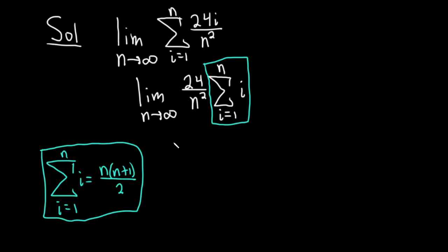So this is now going to become the limit as n approaches infinity of 24 over n squared times, and now we're going to apply the formula to what you see here in the blue box. So this is n, n plus 1, and it's all divided by 2.